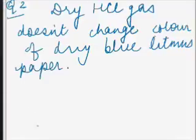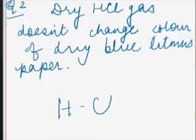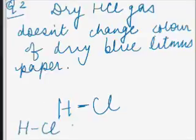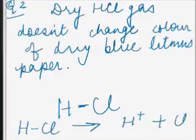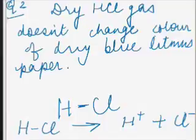Dry HCl gas does not undergo dissociation into H⁺ and Cl⁻ ions because HCl is a covalent molecule. The dissociation reaction HCl → H⁺ + Cl⁻ cannot occur in the absence of water. This is because the highly concentrated positive charge of the H⁺ ion would join back with the chloride ion to reform the HCl molecule. Since H⁺ ion is not present in dry HCl gas, the color of the blue litmus paper does not change.